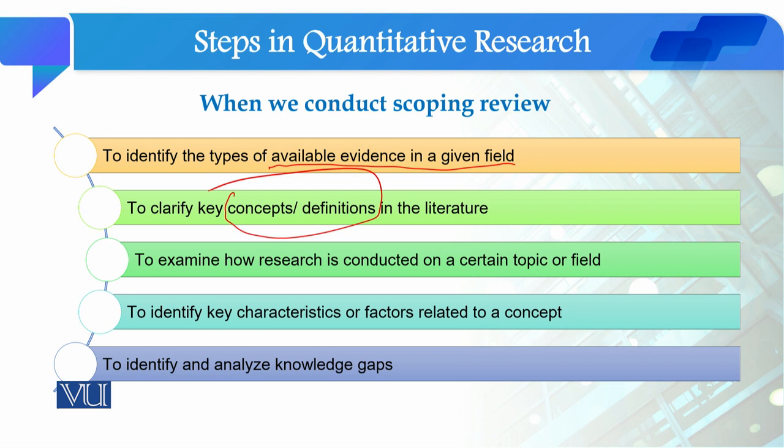The third objective is to examine how research is conducted on a certain topic or field — we try to analyze the process of research. In a scoping review on a topic, we look at what kinds of methodologies are being followed and what patterns of analysis are being used.